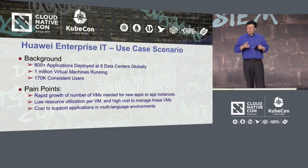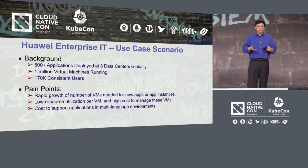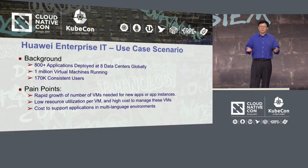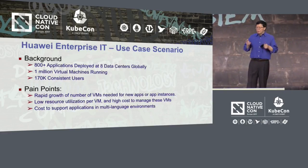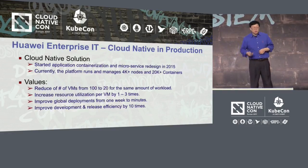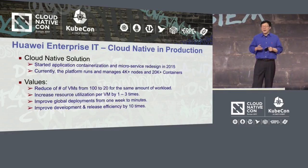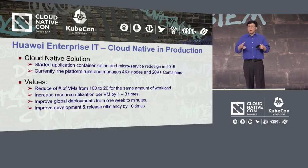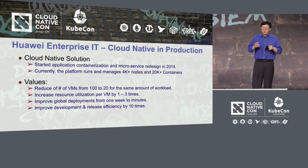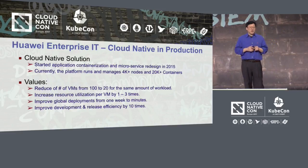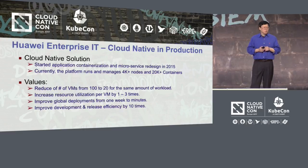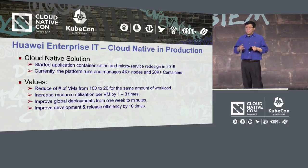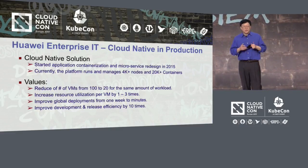One of the big problems they had, among other pain points, is resource utilization. They very quickly ran out of VMs needed for new applications and new instances, and the resource utilization for VMs was really low. So they started looking at cloud native architecture back in 2015, redesigning some apps with microservices architecture and containerizing applications. By the end of last year, 2016, they were managing more than 4,000 nodes running 20,000 containers in production. They got so excited that the goal for this year is to run 100,000 containers in the production environment.